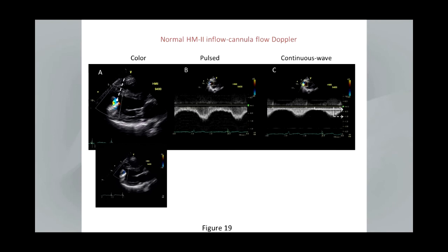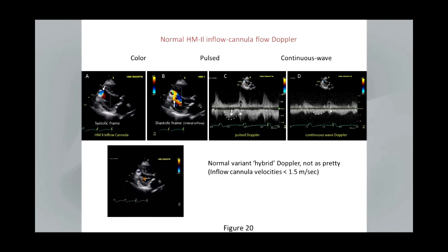This is normal flow on the HeartMate II inflow cannula using pulsed and spectral Doppler. This other normal inflow cannula Doppler flow is just a little more complicated because the patient had a mitral valve repair, and septal interaction with the cannula tip creates just a little bit of flow — giving this normal variant hybrid Doppler. It's not as pretty, but sometimes this is not something to be too alarmed about, as long as the flow velocities are not elevated.